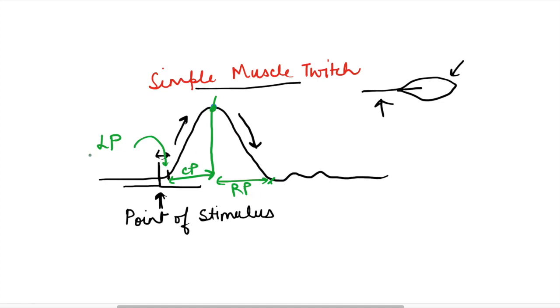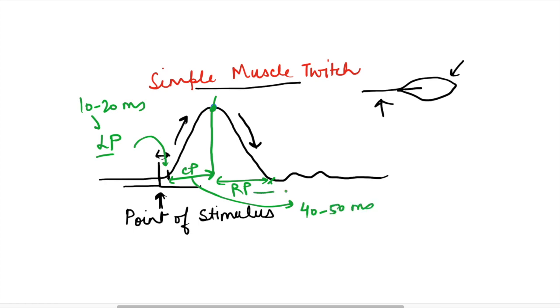In the frog, the latent period is approximately 10 to 20 milliseconds, the contraction period is approximately 40 to 50 milliseconds, and the relaxation period is approximately 50 to 60 milliseconds.